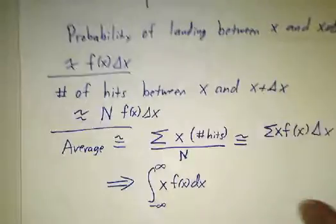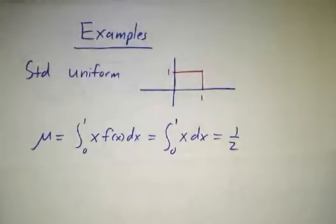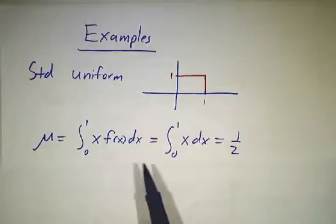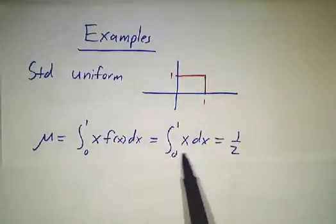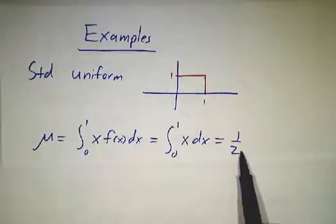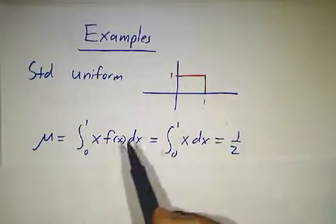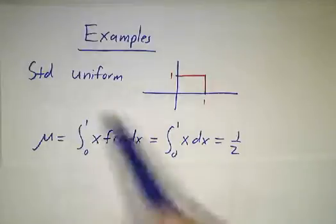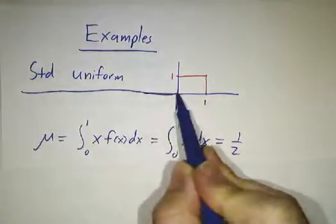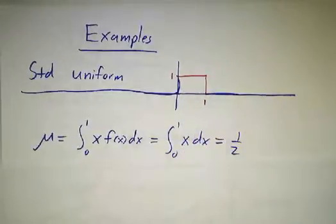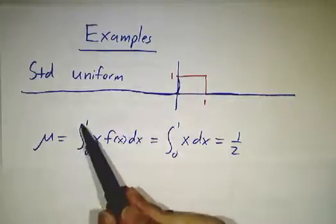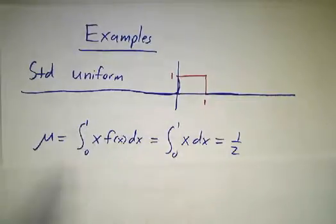Let's see how that works for the distributions we've been talking about. For the standard uniform distribution, the average is a half. You integrate x times f of x, but f of x is just 1 between 0 and 1, so you integrate from 0 to 1 of x dx and get a half. Strictly speaking, you integrate from minus infinity to infinity, but f is 0 outside of 0 to 1, so you only have to integrate over the range of possible values of x.